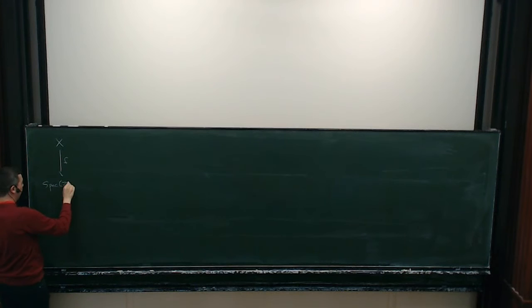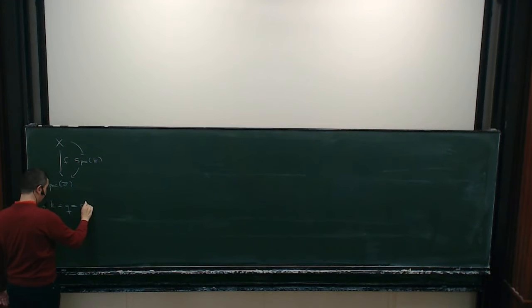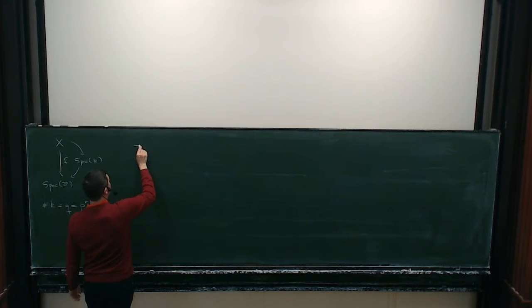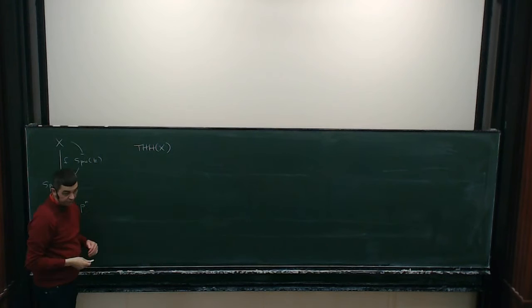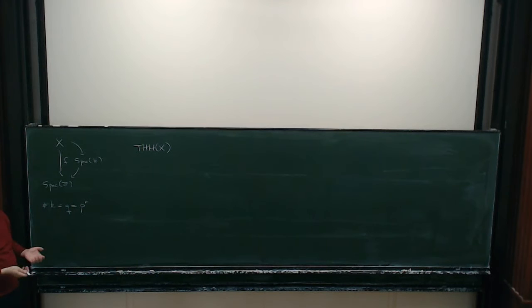So now that Stefanie raised everything, let me write this again. So we have this, but it's sitting at just one prime. And then we had THH of X, which we should think of as a generalization of Kähler differentials.